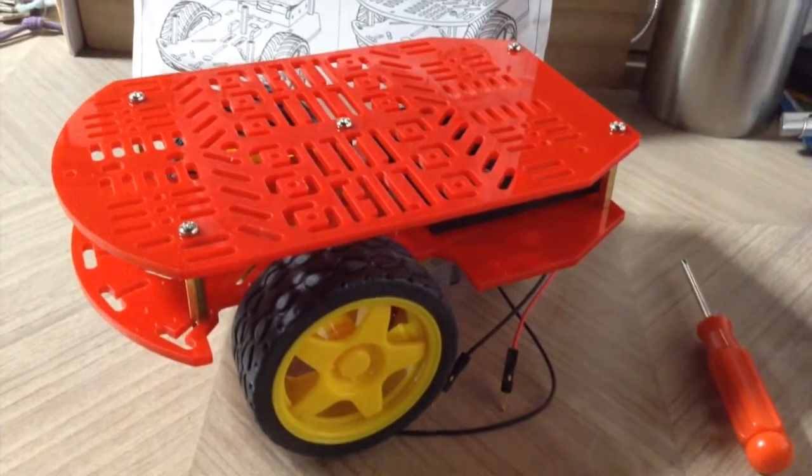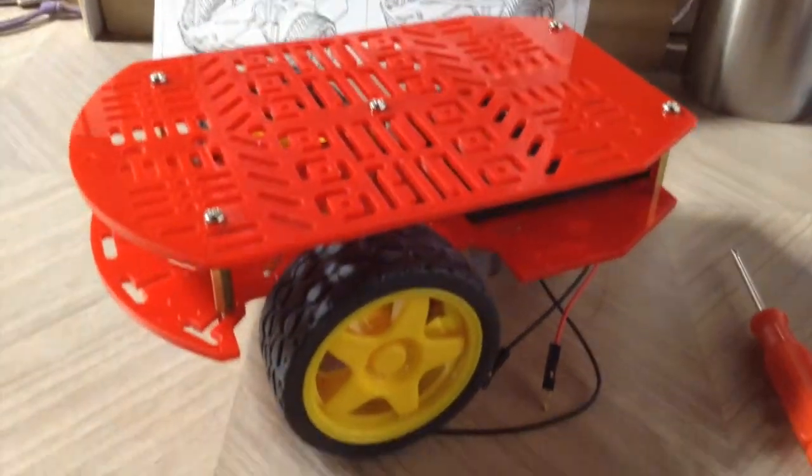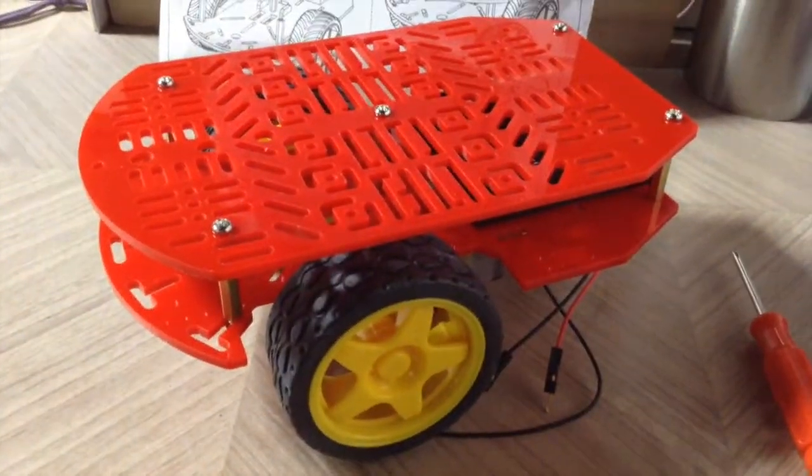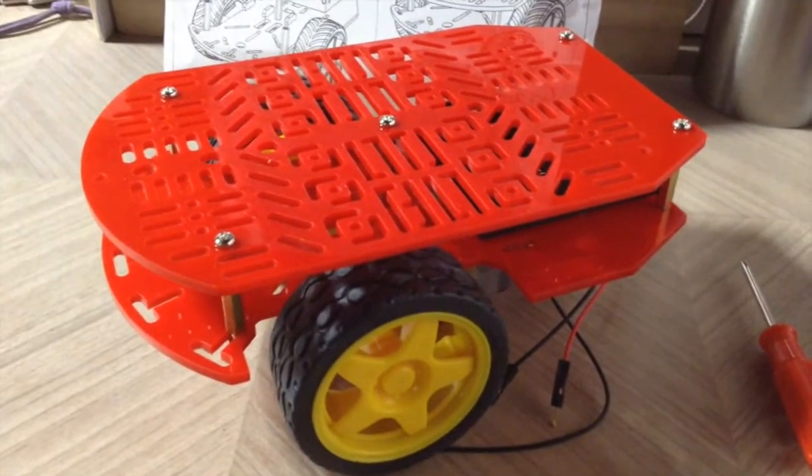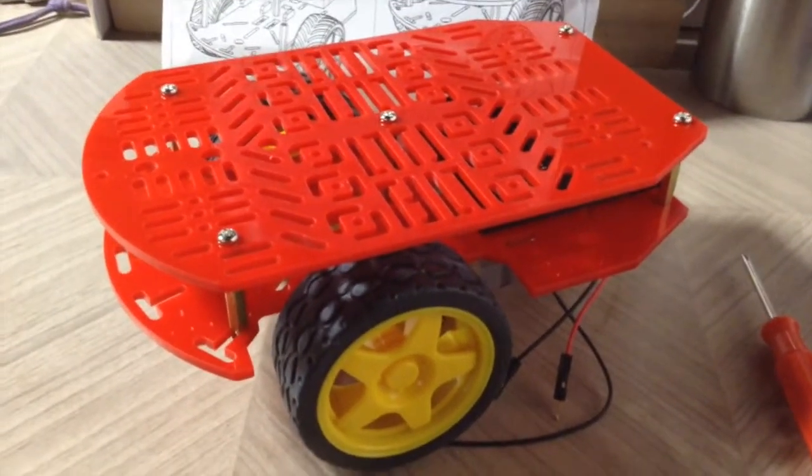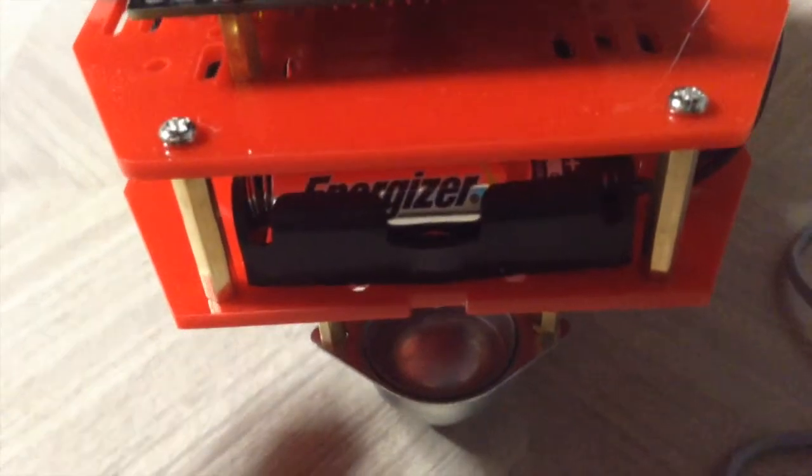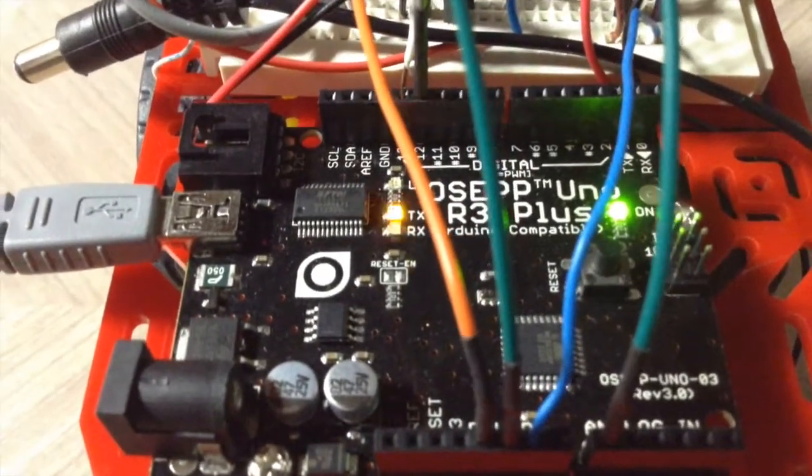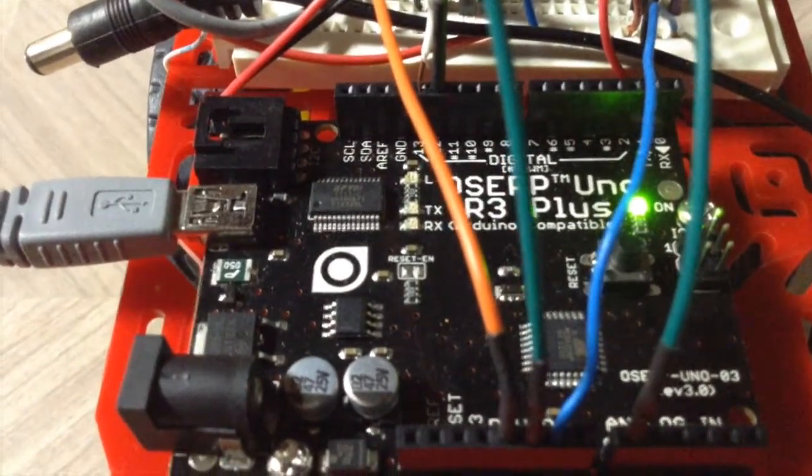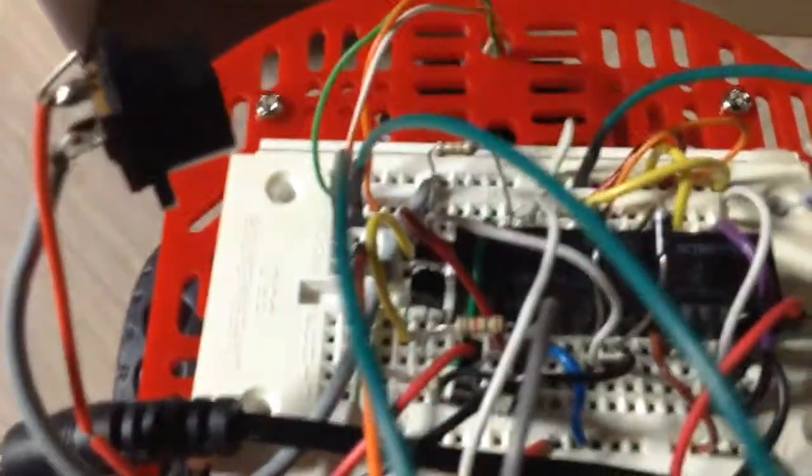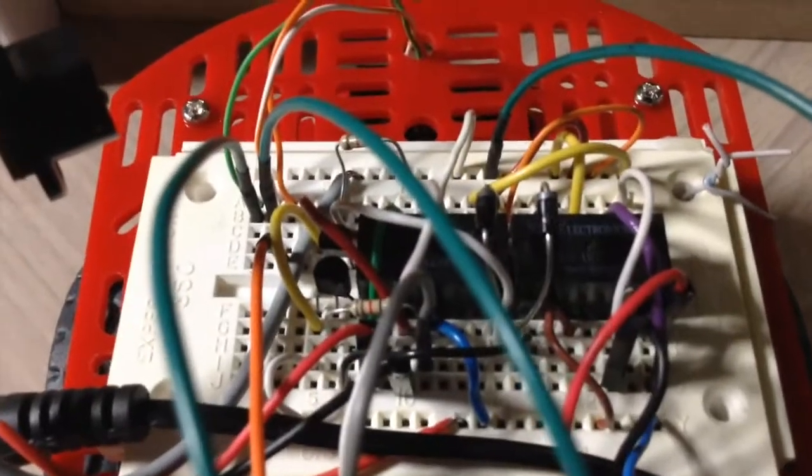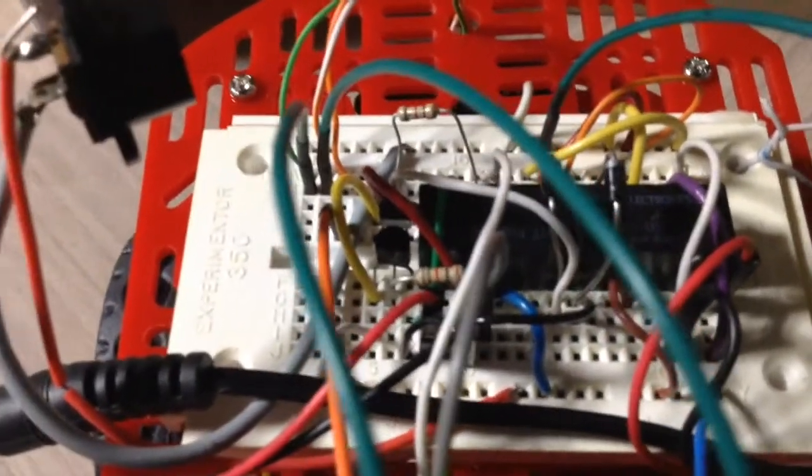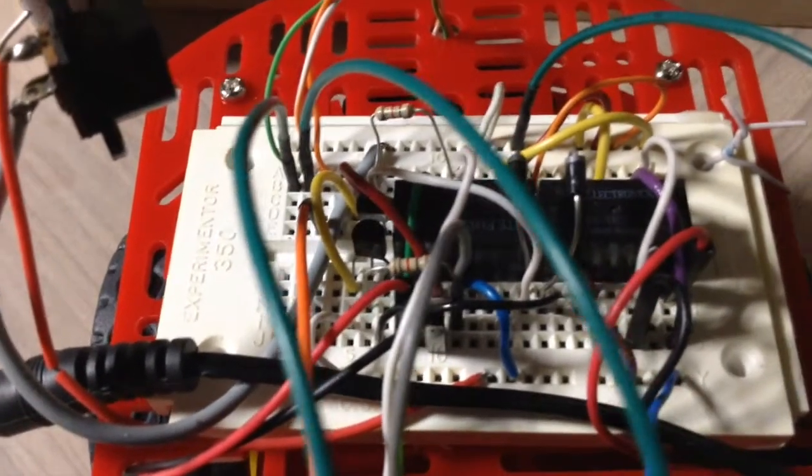But I still need to add some more circuitry. So I'm going to have some interface electronics and the microcontroller that I'm going to add. Now here is the finished robot with the OSEP Uno R3 Plus Arduino compatible board and the interface board for interfacing between the microcontroller and the motors.